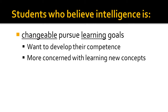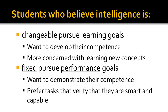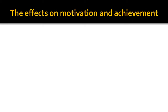Researchers have found that students who believe intelligence is changeable pursue learning goals. Students with learning goals want to develop their competence and are more concerned with learning new concepts. In contrast, students who believe intelligence is fixed pursue performance goals. Students with performance goals want to demonstrate their competence and prefer tasks that verify that they are smart and capable.